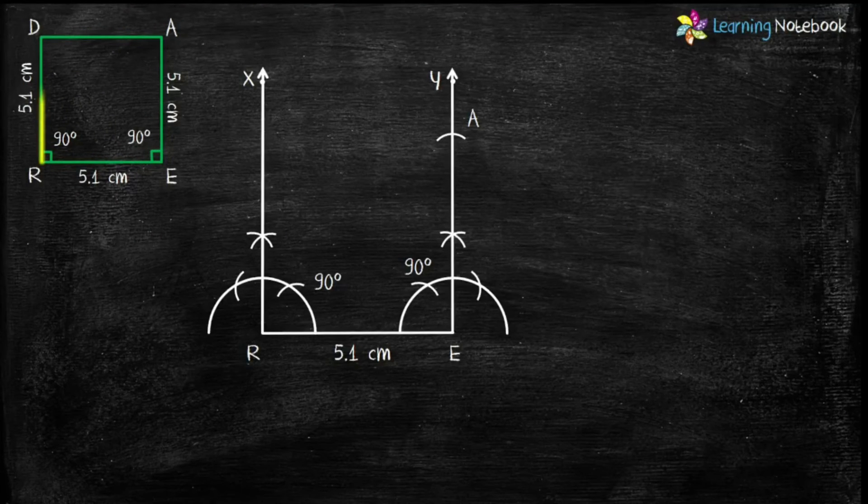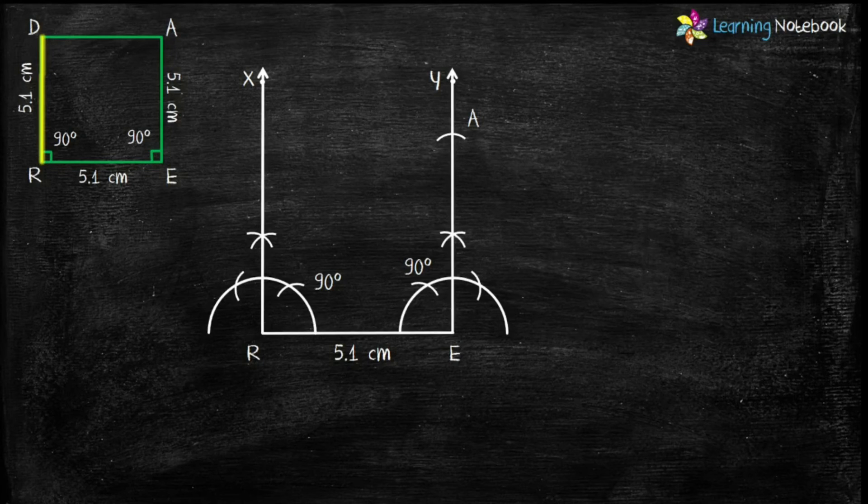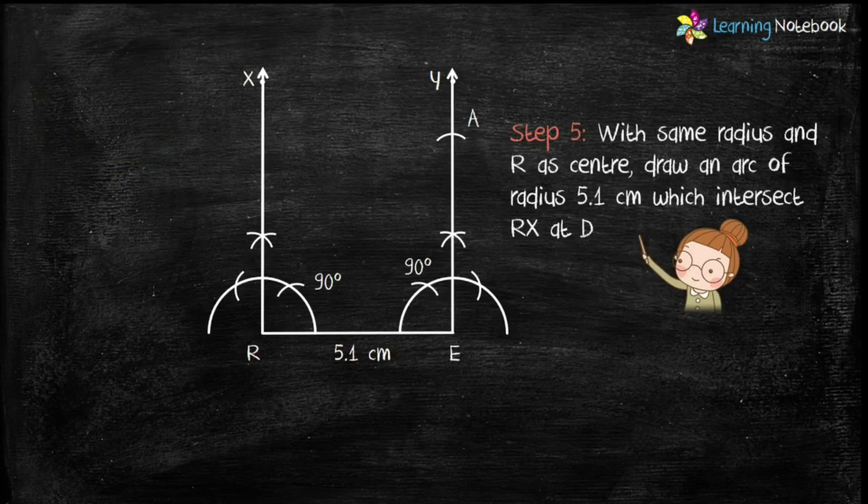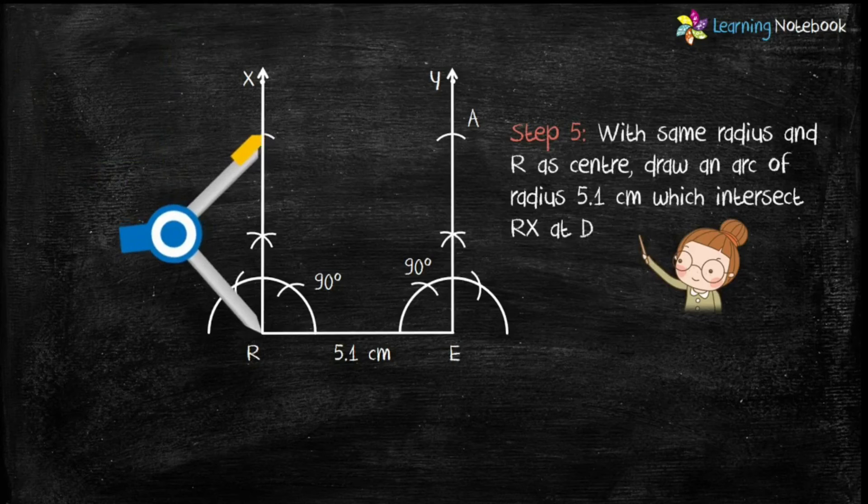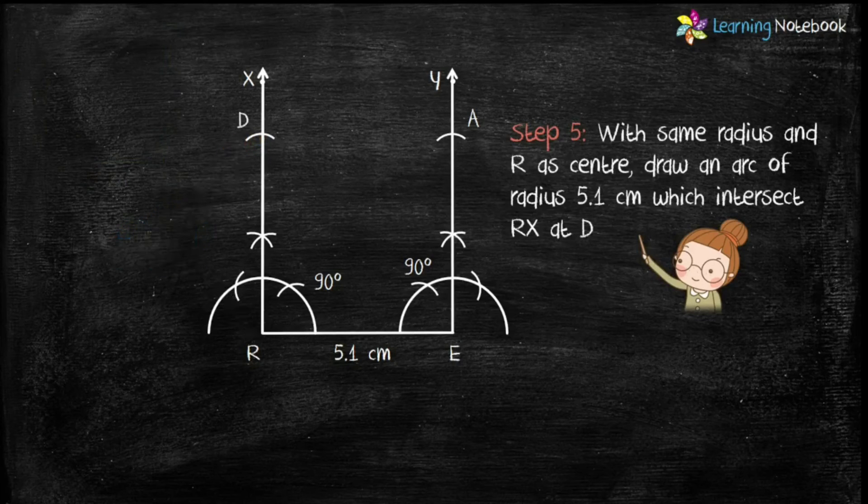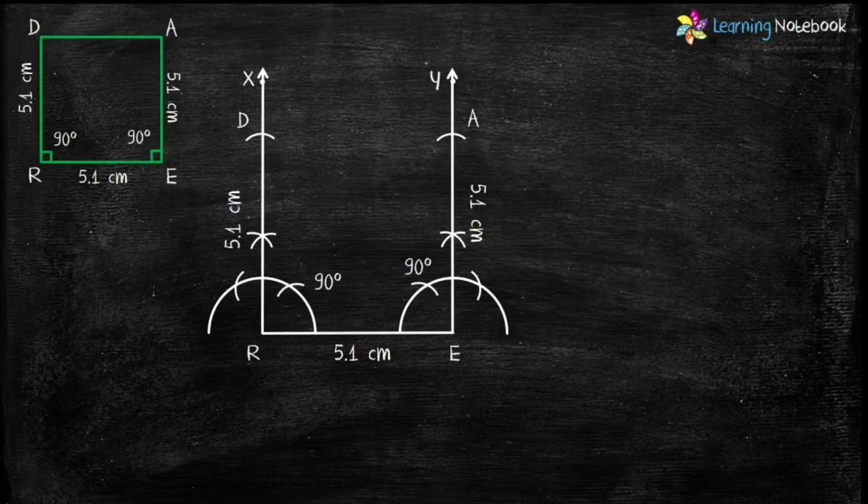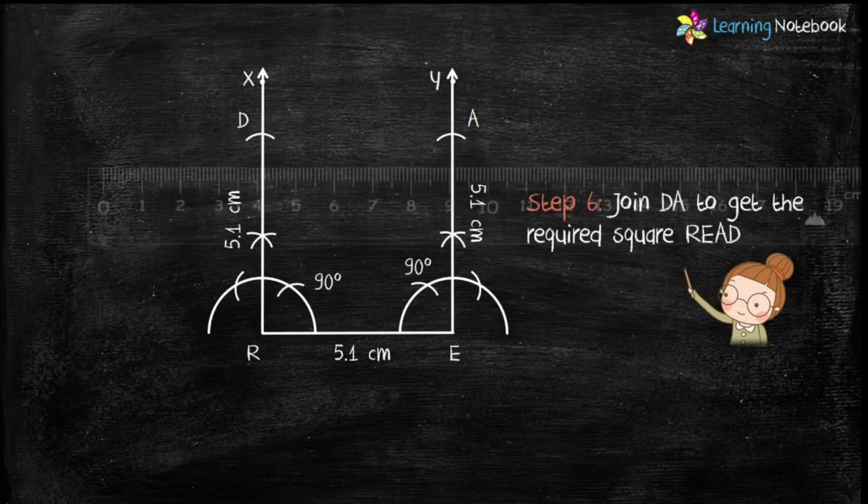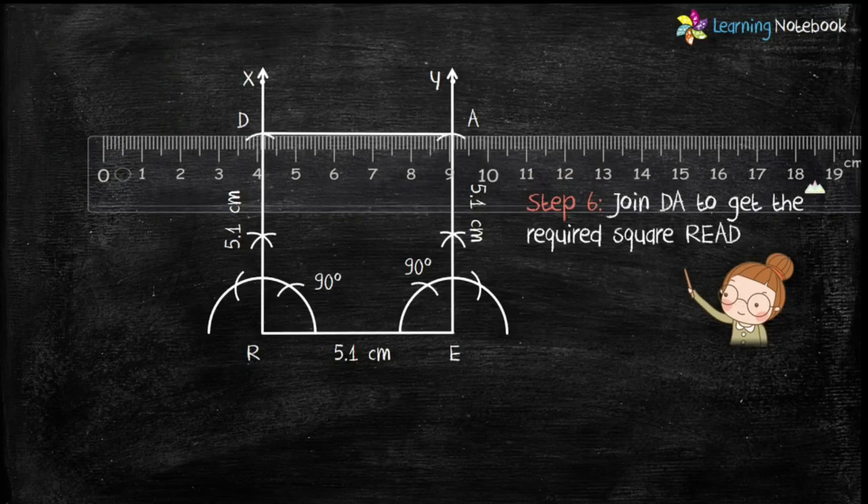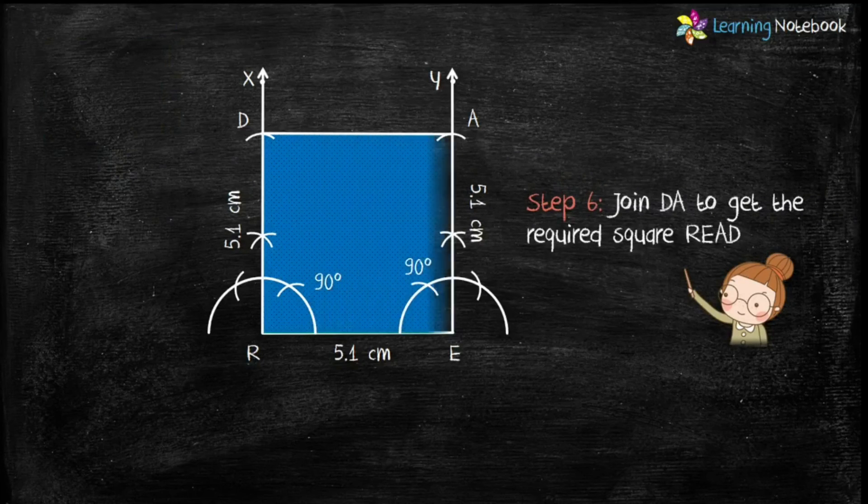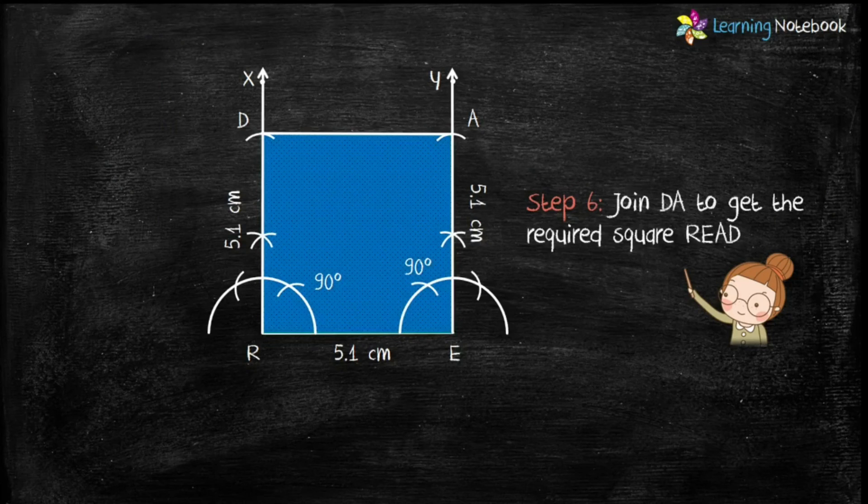Now in step 5, let's draw side RD which is again 5.1 cm. So keeping the radius same and R as center, draw an arc which intersects RX at point D. In the last step, let's join DA and we get the required square READ.